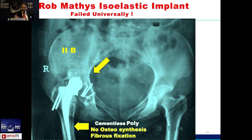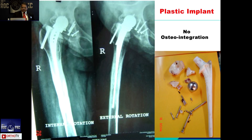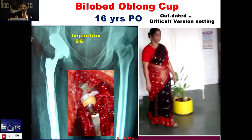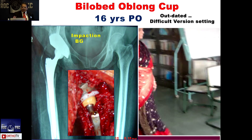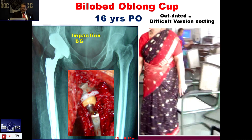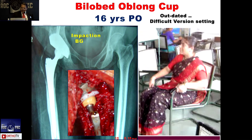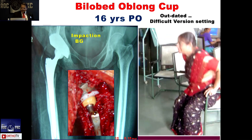Previously, oblong cups such as the isoelastic implant by Rob Matthews were used, but these have gone out of practice worldwide because there is no osteointegration — only stability. The oblong cup has also fallen out of fashion because you cannot adjust version. This is one old case at 16-year follow-up where everything is still intact.